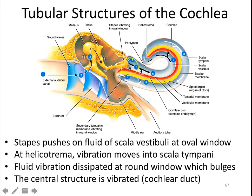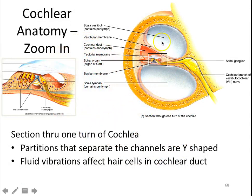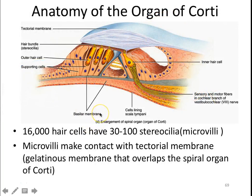High-frequency sounds, since they're closest to the stapes, are often the first to go as we get older. That's why younger individuals hear higher-pitched sounds like mosquitoes much better than older people. Here's another look at those chambers — the scala vestibuli, scala tympani, and the scala media — and you'll notice a little structure inside that does all the work.